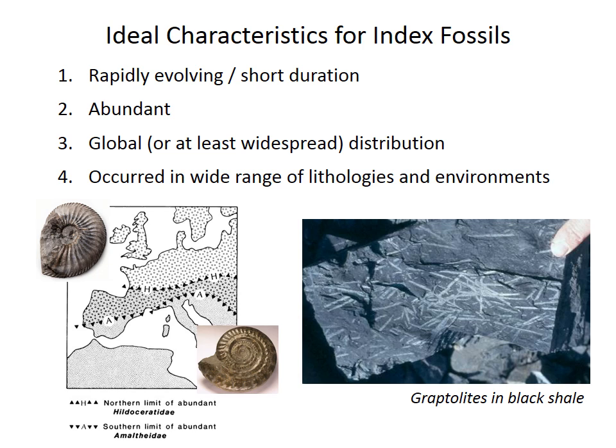Third, a good index fossil should have a global or at least very widespread distribution to allow correlations between different places and regions. Truly global distributions don't occur, however. The lower left illustration shows the typical range of a couple of early Jurassic ammonite families. The Hildoceratids typically occur at lower latitudes, whereas the Amaltheids occur at higher latitudes. As a result, there are two parallel zonations in Europe — one in Northern Europe and one in the Mediterranean region — that must be correlated to each other.